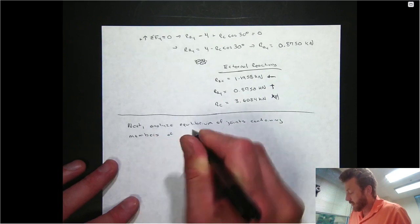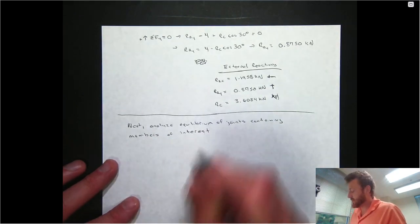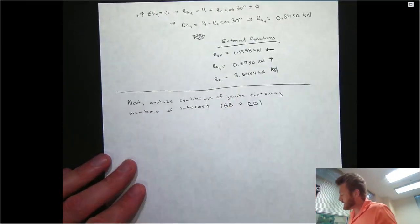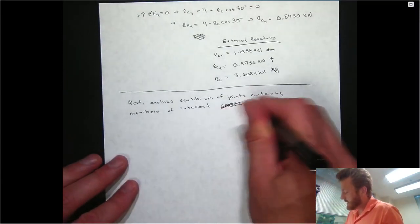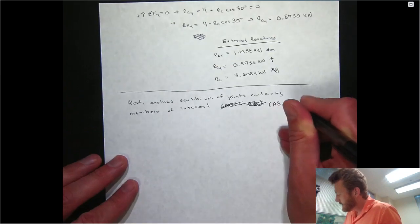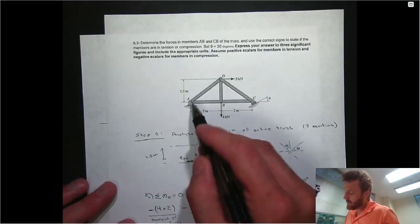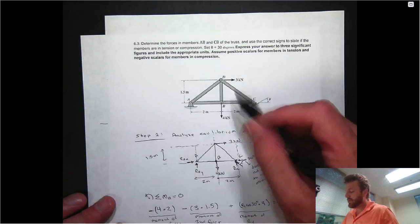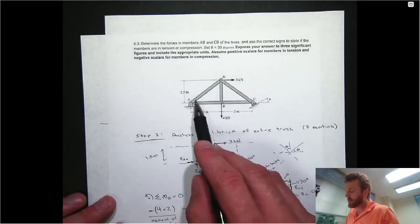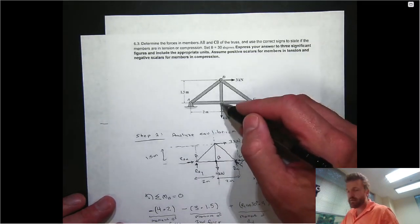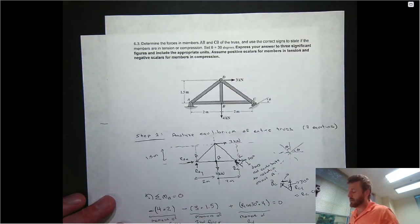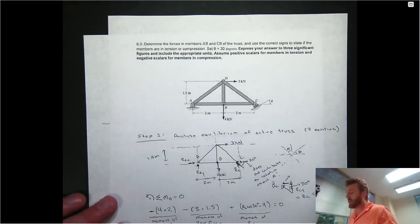On an exam, you may only need to find forces in a subset of members, in this case AB and CB. You could find both by analyzing joint B, but that joint has three unknowns — forces in AB, CB, and DB — and only two equations, making it statically indeterminate. So you must start at a pin with only two unknowns. Starting at pin A, knowing the external reactions, the only unknowns are the forces in members AD and AB.